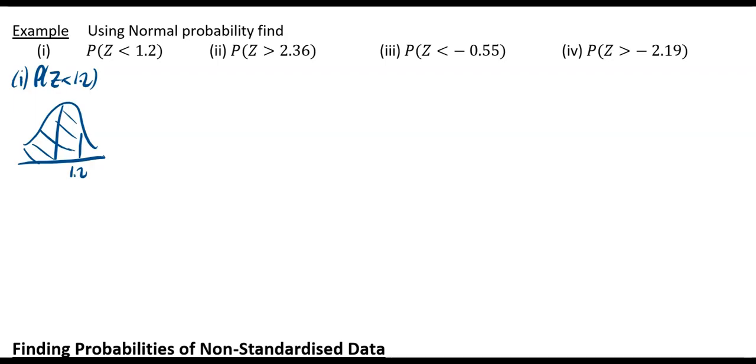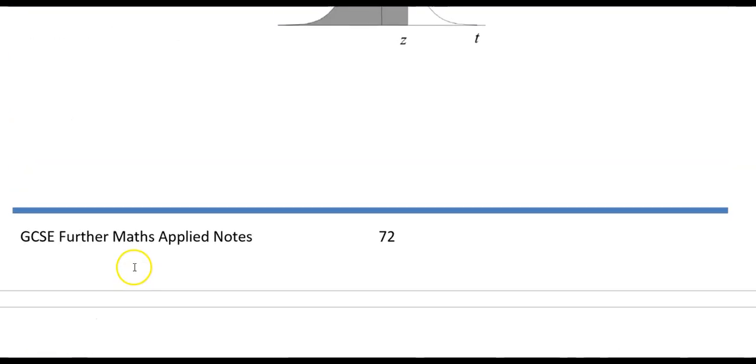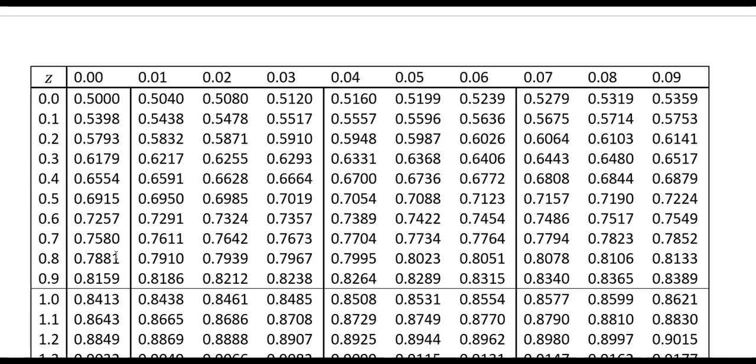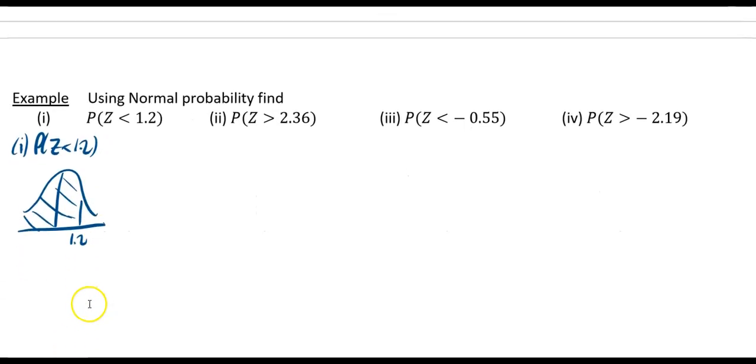Remember your tables only work as less than, and from the midpoint at 0. If they're not in that form you may have to flip your diagrams around a bit. We can do this one directly from our tables. We want to find the probability that z is less than 1.2, and 1.2 is 1.20. It's in the first column, so it's 0.8849. The probability that z is less than 1.2 equals 0.8849.